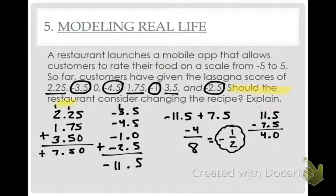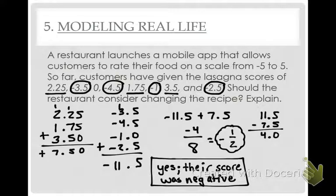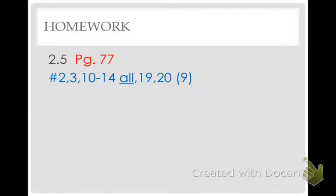Should my answer be positive or negative? Negative — because there's one negative. So we divide negative 4 by 8 to get negative 4 eighths, which reduces to negative 1 half. Should the restaurant consider changing the recipe? Yes — their score came out negative, meaning people don't seem to like it very much. It is time for this restaurant to go ahead and change their recipe. This is the homework assignment for tomorrow on 2.5 — there are only 9 problems.